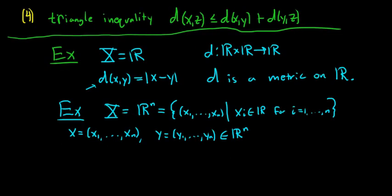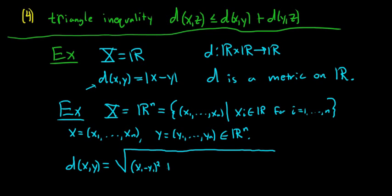d(X,Y) = √[(x₁-y₁)² + ... + (xₙ-yₙ)²]. We basically subtract components: x₁ minus y₁ squared, plus dot dot dot, plus xₙ minus yₙ squared, all under a square root. This is known as the Euclidean metric, named after Euclid, a famous mathematician. A very important metric space.